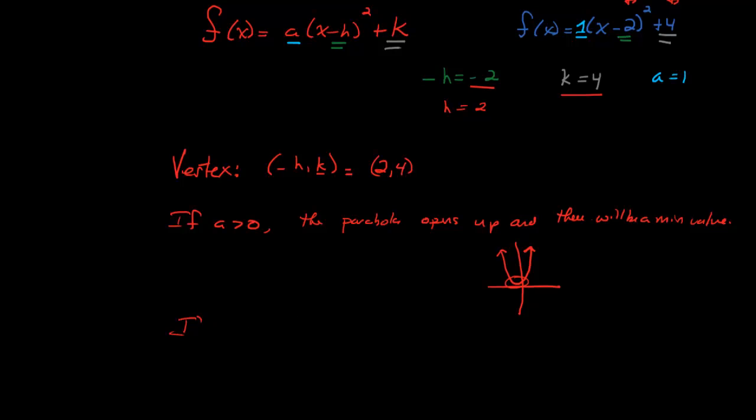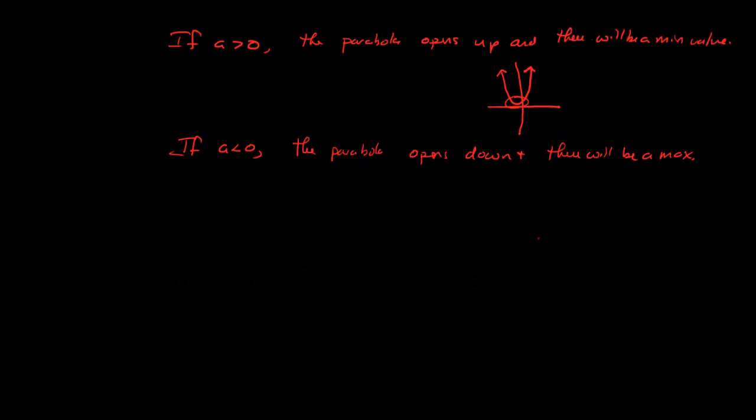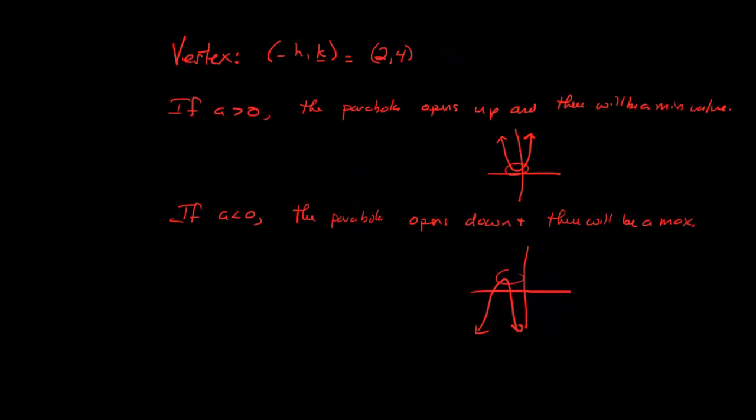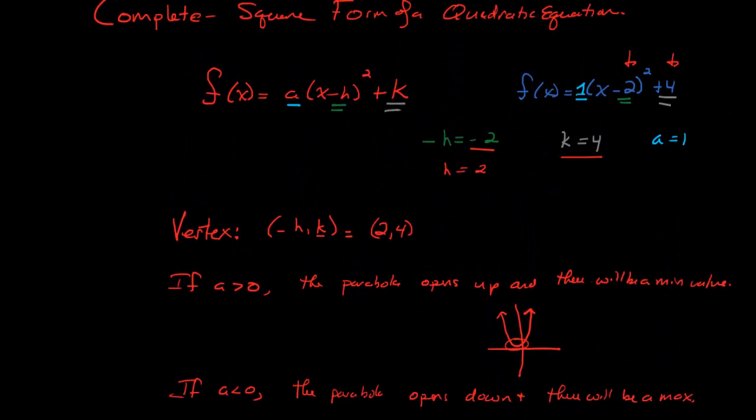However, if your leading coefficient is negative or less than 0, the parabola opens down and there will be a max. So that means that we're going to open down and there's going to be a max. And that would be our max value. The vertex would be the max value.